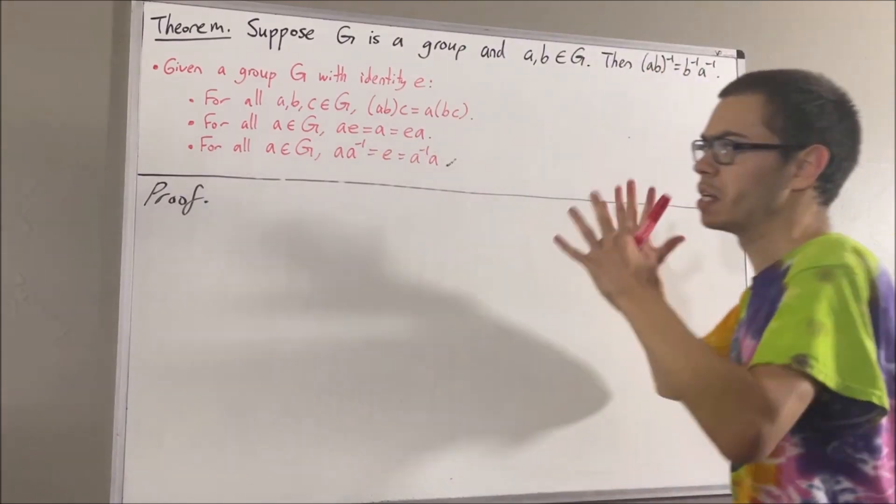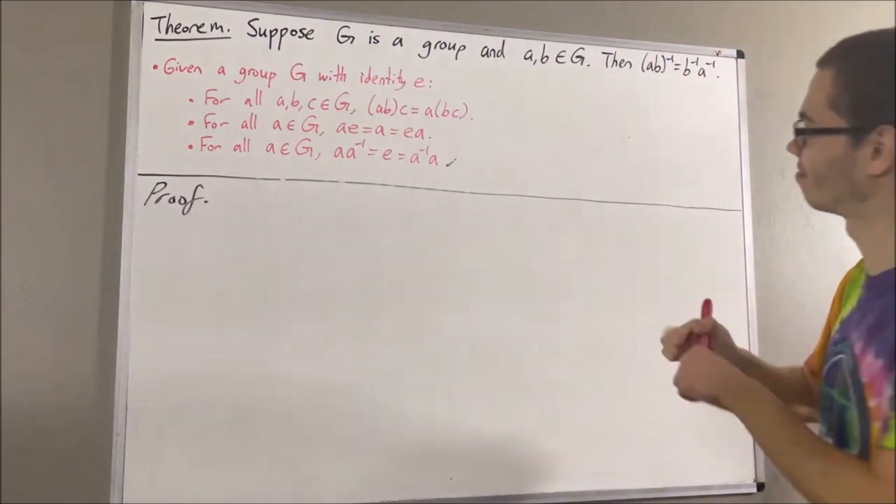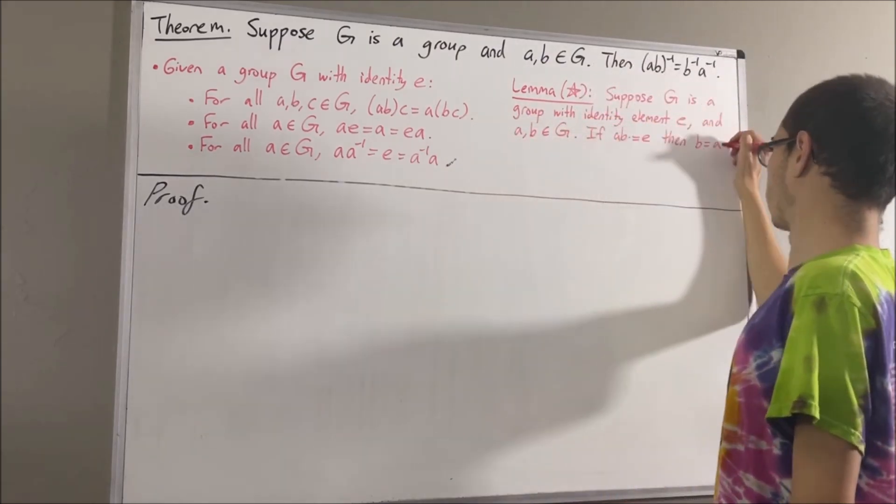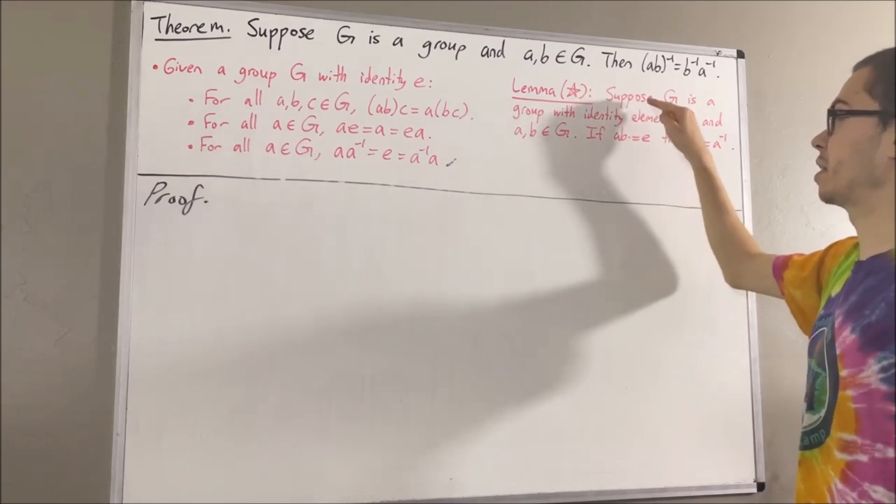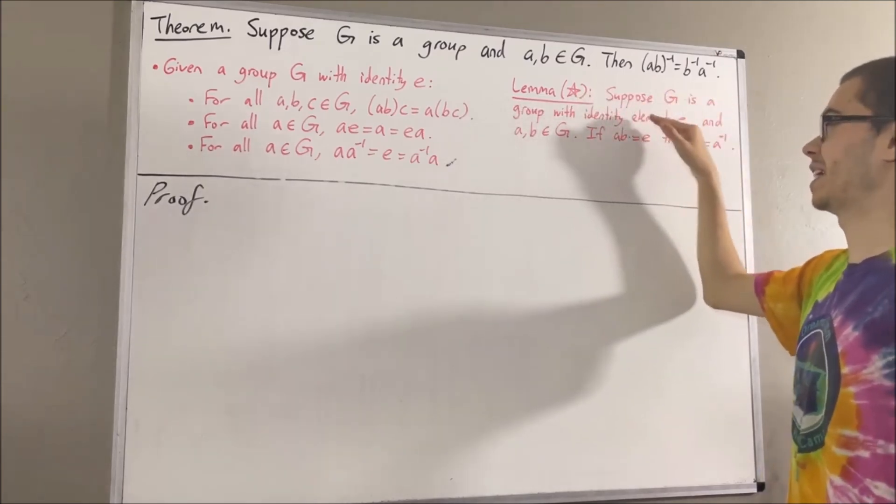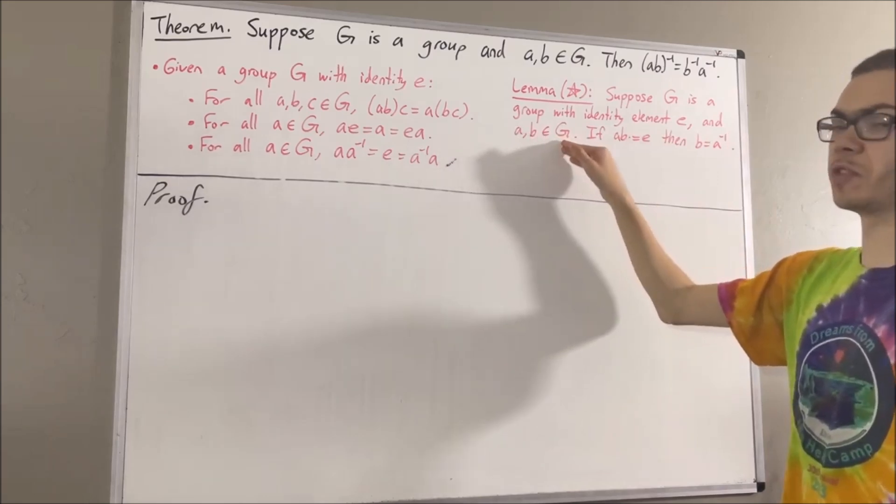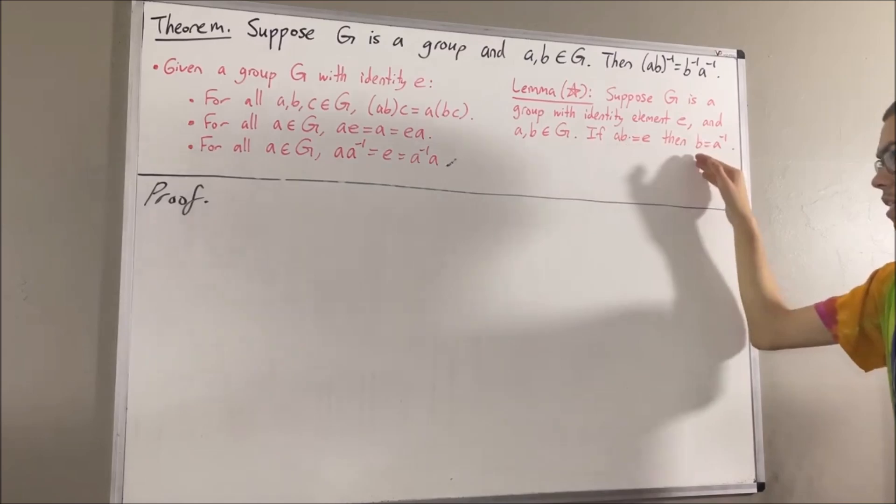Now, in proving this theorem, we are going to use the following preliminary result. I'm calling this preliminary result lemma star, and it says, suppose G is a group with identity element E, and suppose A and B are elements of G. If AB is equal to E, then B is equal to A inverse.